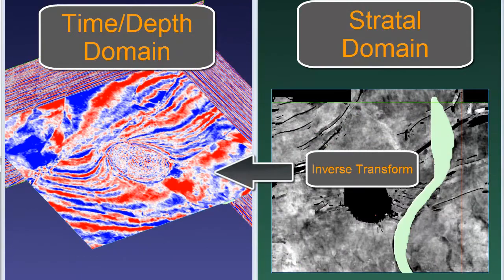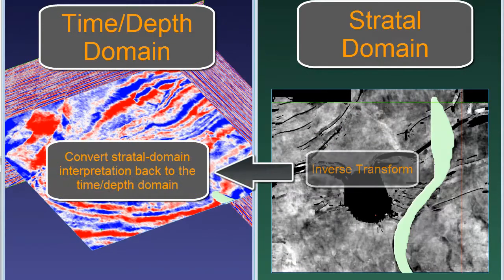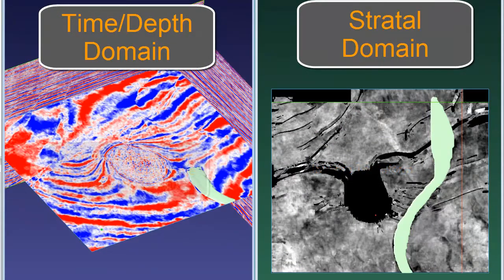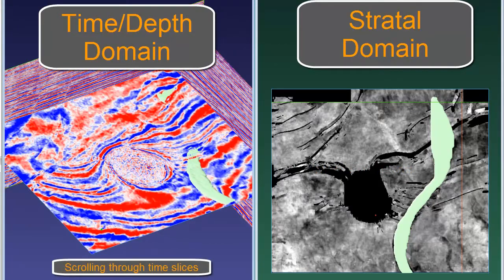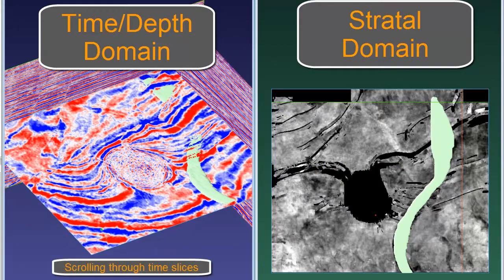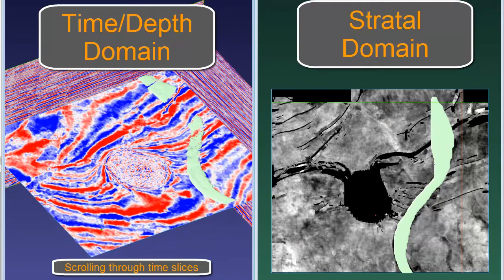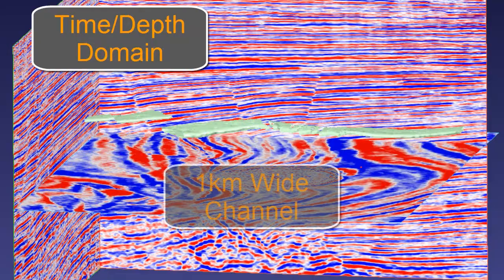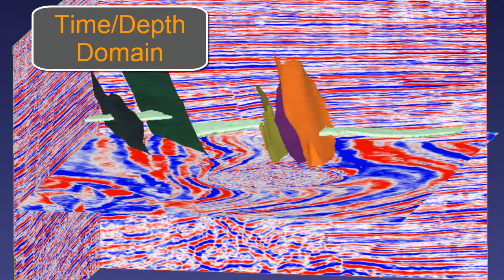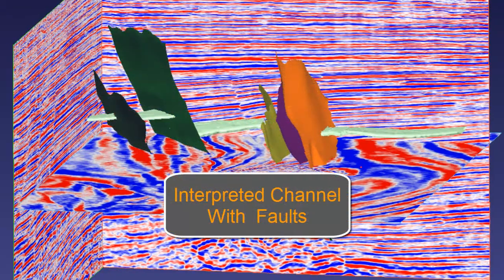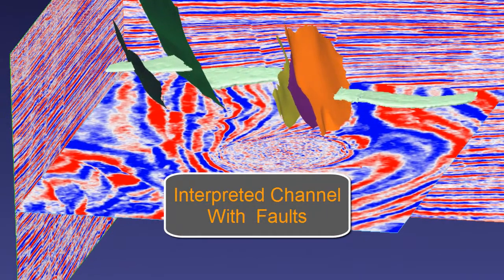Next, the interpreter uses PaleoSpark's inverse transform to accurately position the 3D channel back to the time and depth domain. Here we see that same channel in the time and depth domain with faults that were interpreted earlier with Inside Earth's FaultSpark solution.